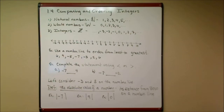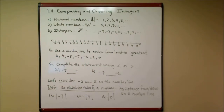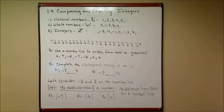The symbol for whole numbers looks like a capital W with an extra slash — it's zero, one, two, three, four, and so on. Then the set we're going to spend time on in the remainder of this chapter is the integers. The set of integers includes all of the whole numbers and all of their opposites. The symbol is a capital Z with an extra slash, and it goes: dot dot dot, negative three, negative two, negative one, zero, one, two, three, and so on.